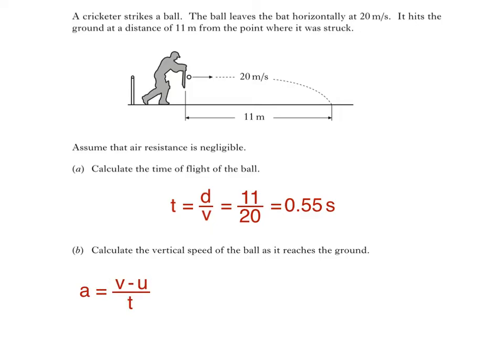a is the vertical acceleration of the ball, 9.8 metres per second squared. v is actually its final velocity. Now, we are being asked for final speed, but the value of its final speed will be equal to the size of its final velocity. So, it's v that we want to find.